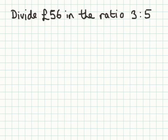This is how to divide an amount or an amount of money in a given ratio. The first thing you do here is you look to see your ratio is 3 to 5. So that means that you're going to have to divide your amount, which is £56, into 3 and 5.